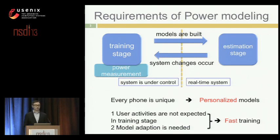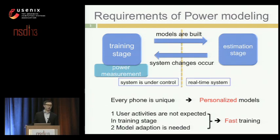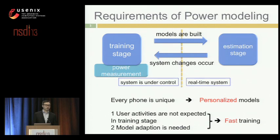The second requirement is faster training — the training stage should take a short time period. Sometimes when we've been using a model for a while, we find the hardware or software configuration has changed and we need to redo the modeling. Frequent adaptation is needed. Also, during the training stage, we don't want user activities interfering because it's a controlled environment. For both these reasons, we need a faster training stage.